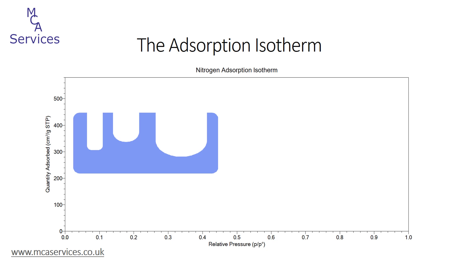We're now going to show what will happen as we start to dose gas, and we do that to predetermine relative pressures. At each pressure, the complete adsorption of nitrogen will be allowed to reach a steady state — a process called equilibration — and the volume adsorbed at each pressure will be recorded.